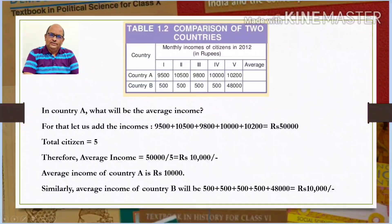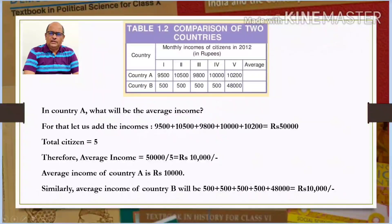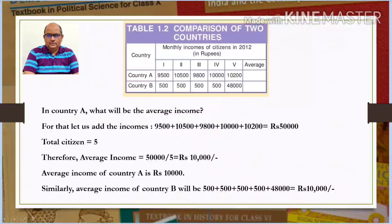Let us see Table 1.2 on page 9. There are two countries, A and B, with 5 citizens each. In country A, the total income comes to Rs. 50,000 as shown in the slide. Total citizens equals 5, therefore average income equals 50,000 divided by 5, which equals Rs. 10,000. Average income of country A is thus Rs. 10,000. Similarly, average income of country B is 50,000 divided by 5, which also equals Rs. 10,000.